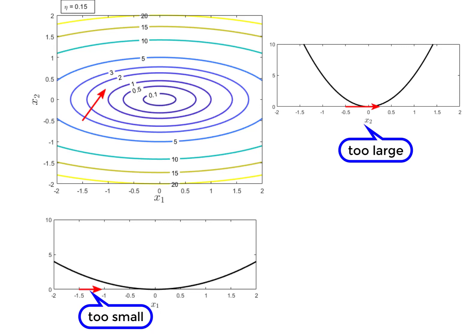But since we are choosing only a single step size value we have to be conservative and choose such that we do not overshoot in any direction. Now backtracking can help a bit by choosing the best possible step size but the fundamental issue here would still remain.